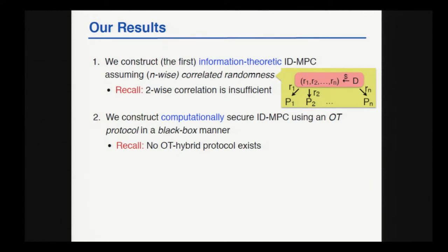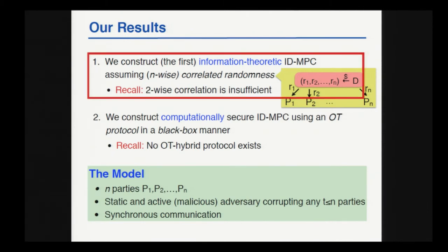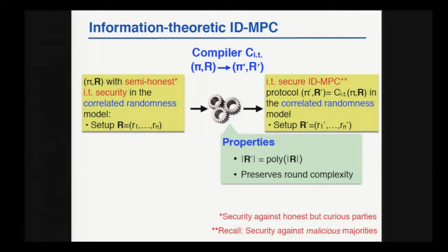In the rest of the talk, I will discuss those two results. Formally, we have N parties P1 to PN. We consider a static adversary who corrupts arbitrarily many of those parties at the beginning of the protocol execution, and we assume a synchronous network. Starting with the first result: we provide a compiler that takes any protocol which is information-theoretically secure in the semi-honest model assuming correlated randomness, and compiles it to a protocol which is information-theoretically secure with identifiability in the malicious model with corrupted majorities in the correlated randomness model, where the correlated randomness for the malicious protocol is polynomial in the initial correlated randomness, and the round complexity is about the same up to a very small constant factor.